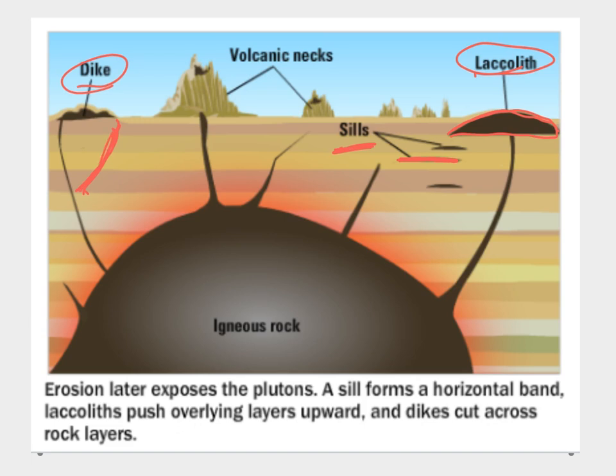In summary: a sill is going to form a horizontal band within a layer, laccoliths are going to push overlying layers upwards, and a dike is going to cut across the rock layers.